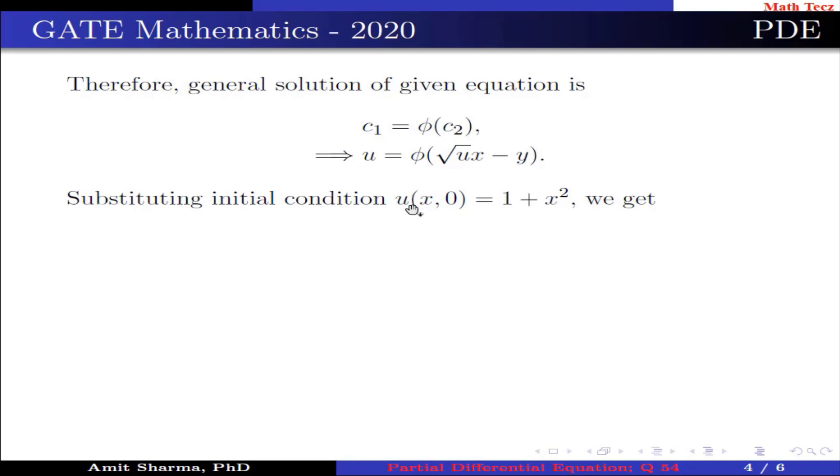Substituting initial condition u(x,0) = 1 + x², we get 1 + x² = φ(√u x), which implies φ(t) = 1 + (t/√u)².